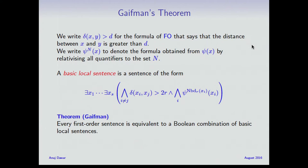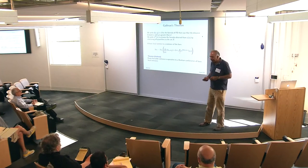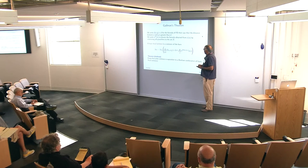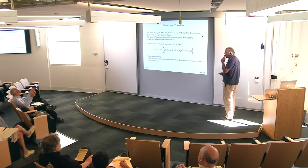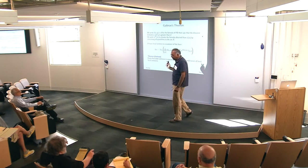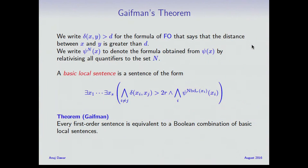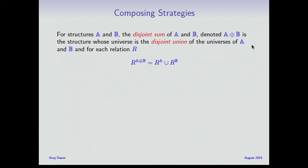Gaifman's theorem says that's essentially what you can do in first-order logic: any first-order sentence is equivalent to a Boolean combination of basic local sentences. This is the strong locality principle of first-order logic. I'm not going to give you a proof — it's a rather convoluted argument. This is true on all structures, nothing to do with finiteness. I'll come back to uses of this in the next lecture.